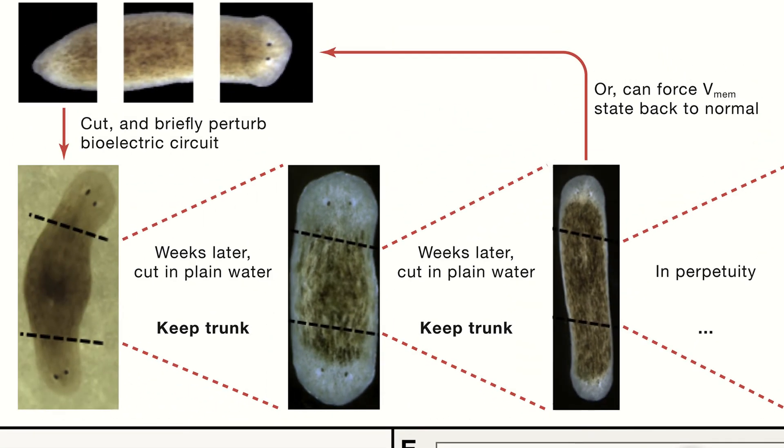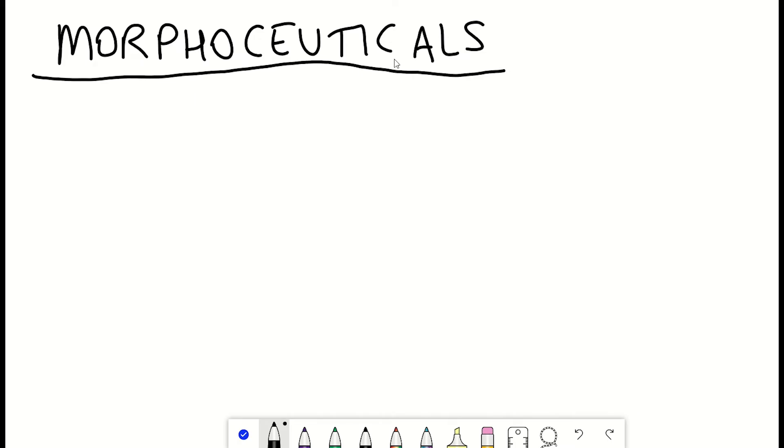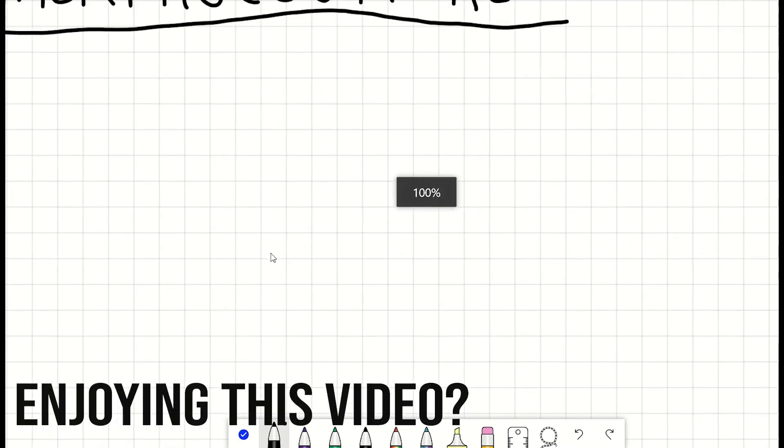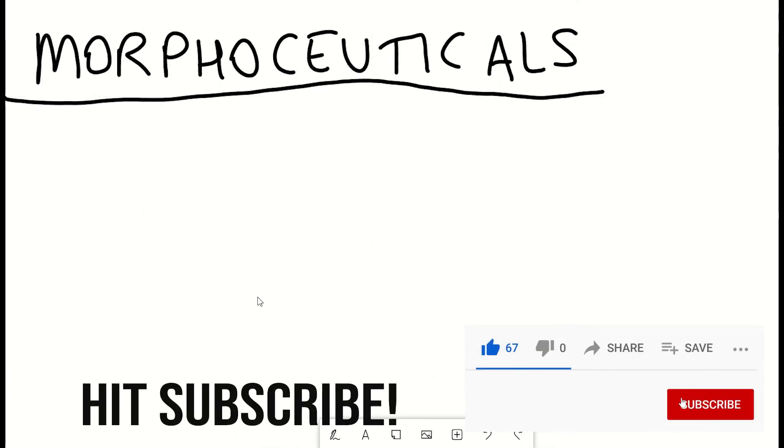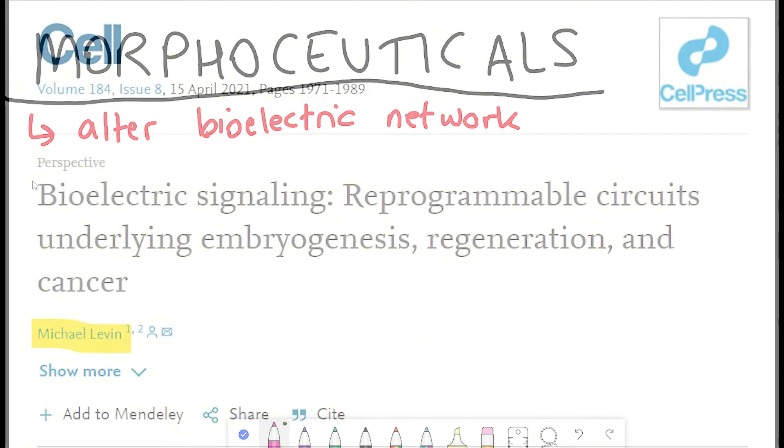But whilst this is all interesting, what about humans, and is there anything more relevant than having two heads? Well, this leads me onto the concept of morphoceuticals, therapeutics that could be used to aid in rejuvenation, treating developmental disorders, or maybe even cancer, by altering these bioelectrical networks present in cells.